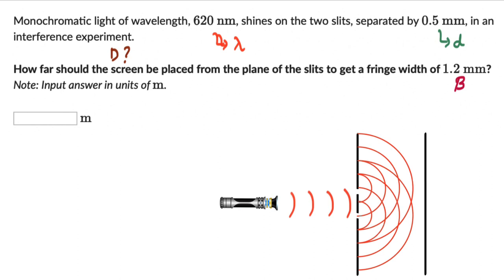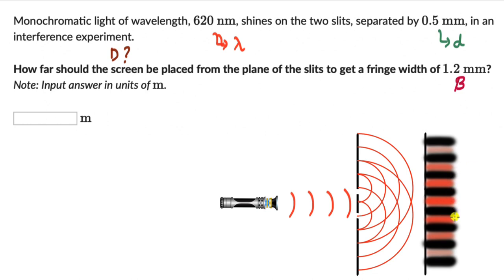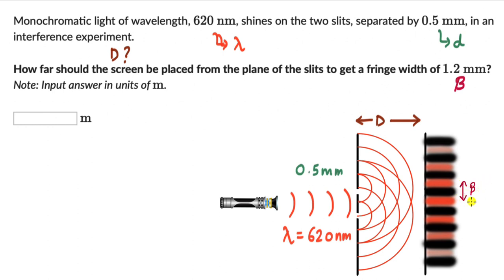We have the screen, the source, and the two slits. Light waves are incident on the slits, undergo diffraction, and then constructively and destructively interfere to produce a fringe pattern on the screen. We know the slit separation d = 0.5 mm and the wavelength λ = 620 nanometers, and we know the fringe width beta = 1.2 millimeters. Using the expression beta = λD / d, we need to find capital D.